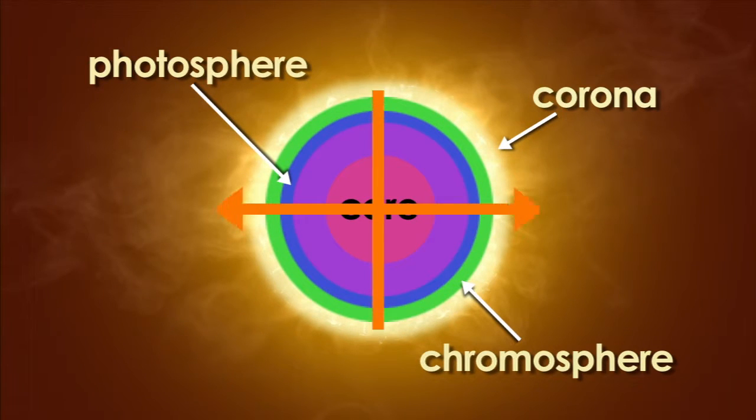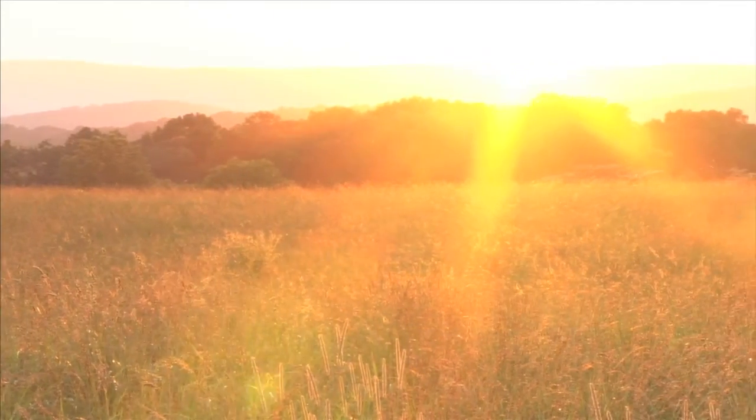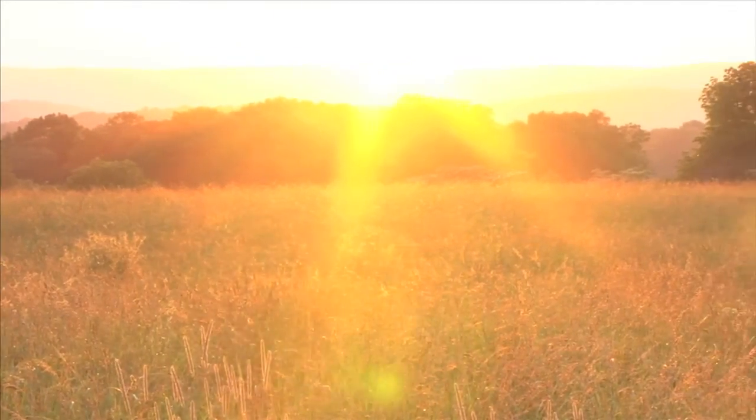Energy moves up from the Sun's core to the surface, where it rushes out into space as waves of light. It takes about 8 minutes and 20 seconds for the light waves to travel from the Sun to the planet Earth.